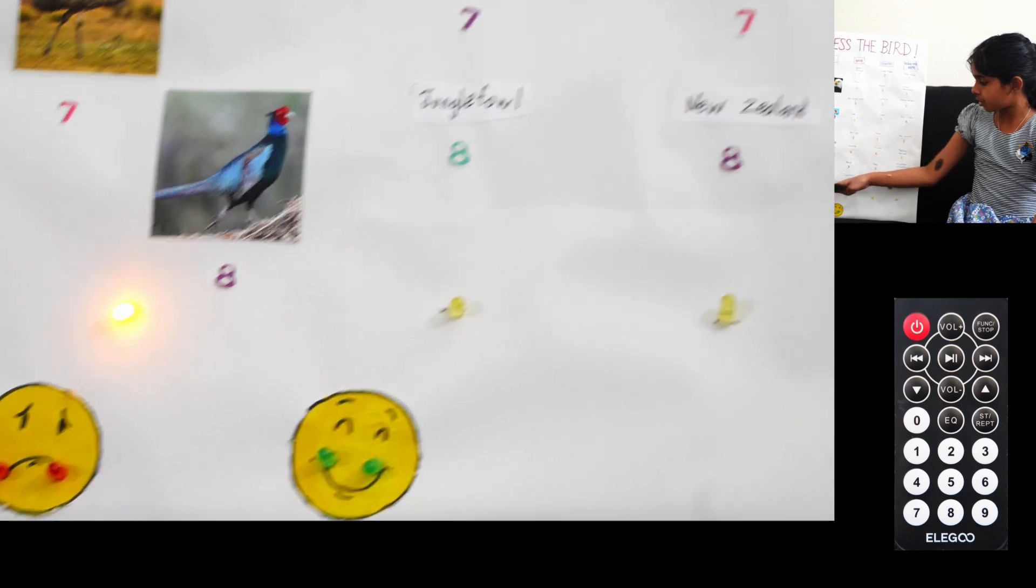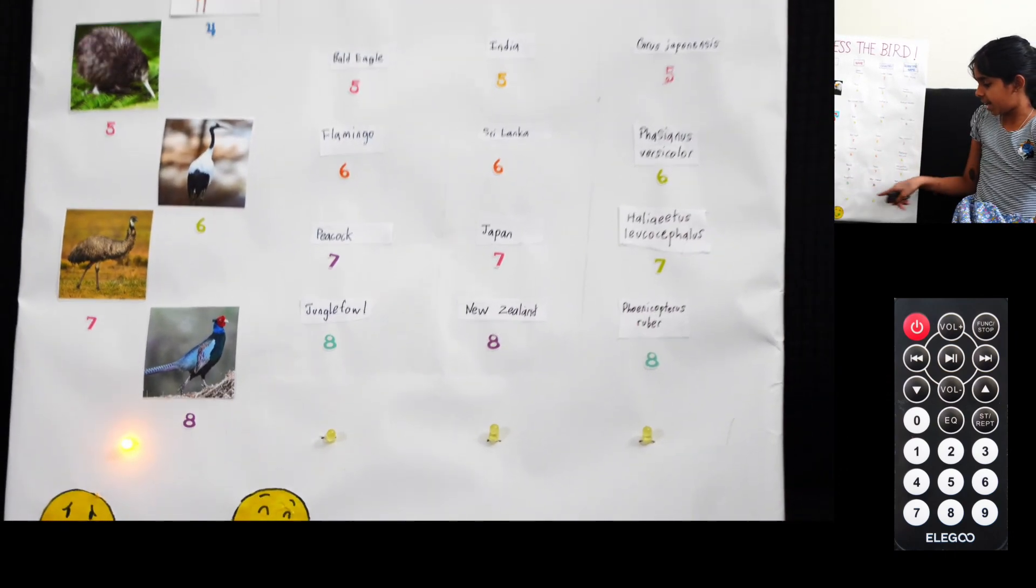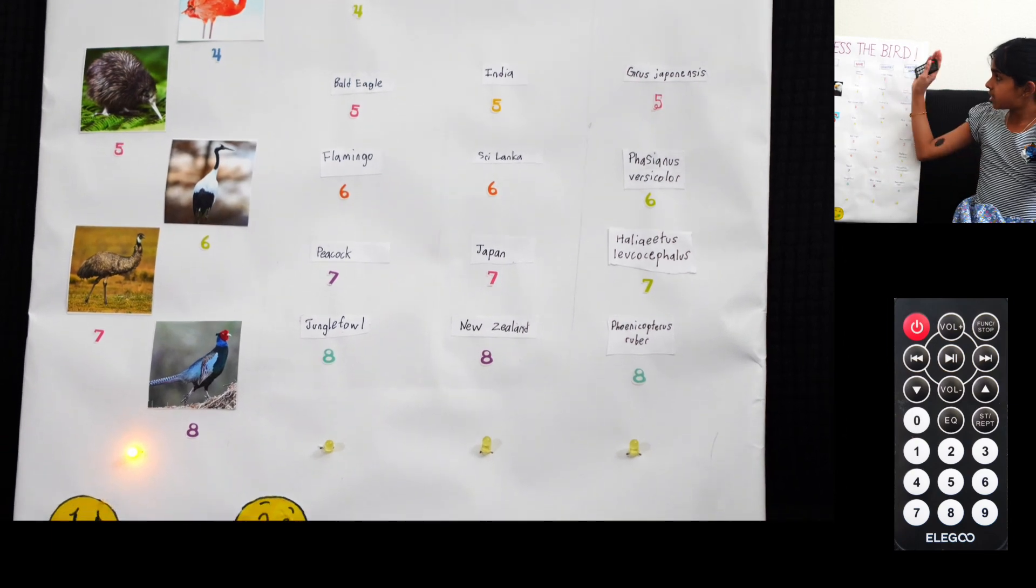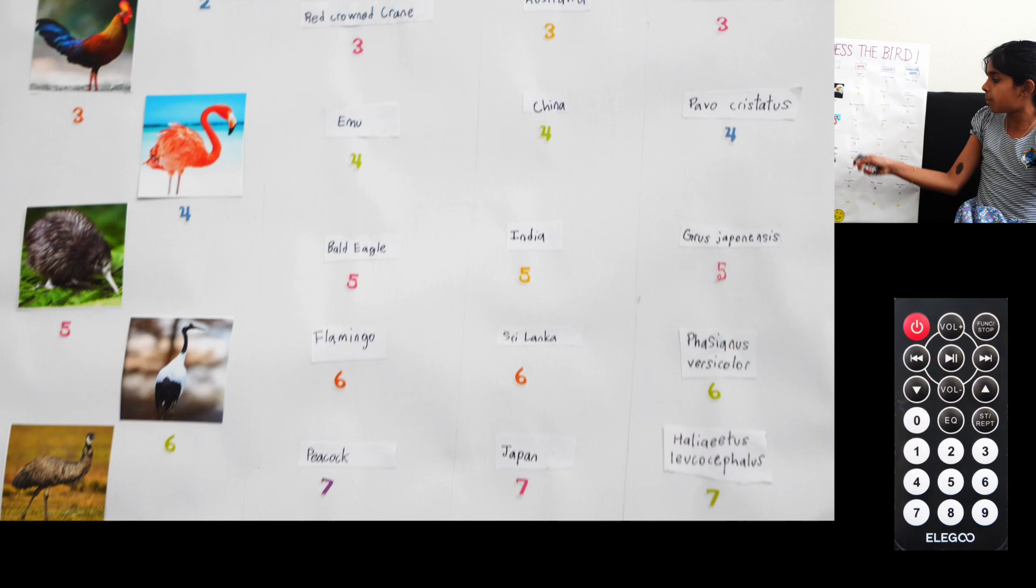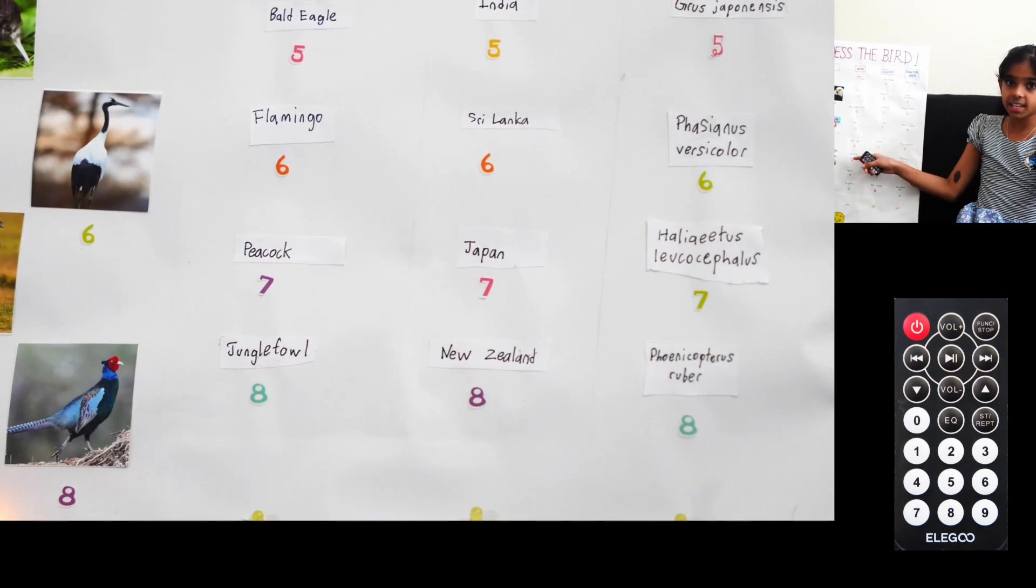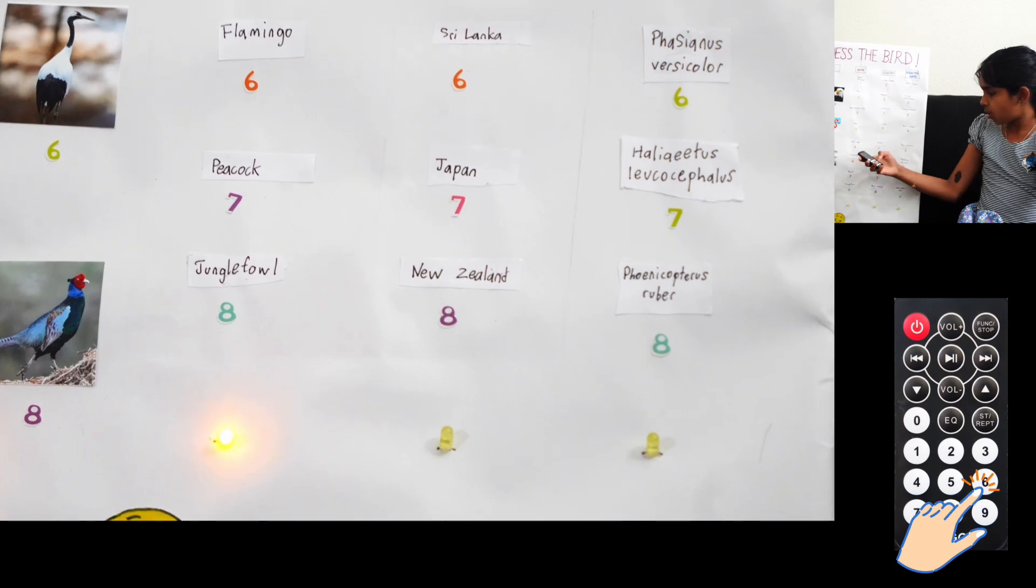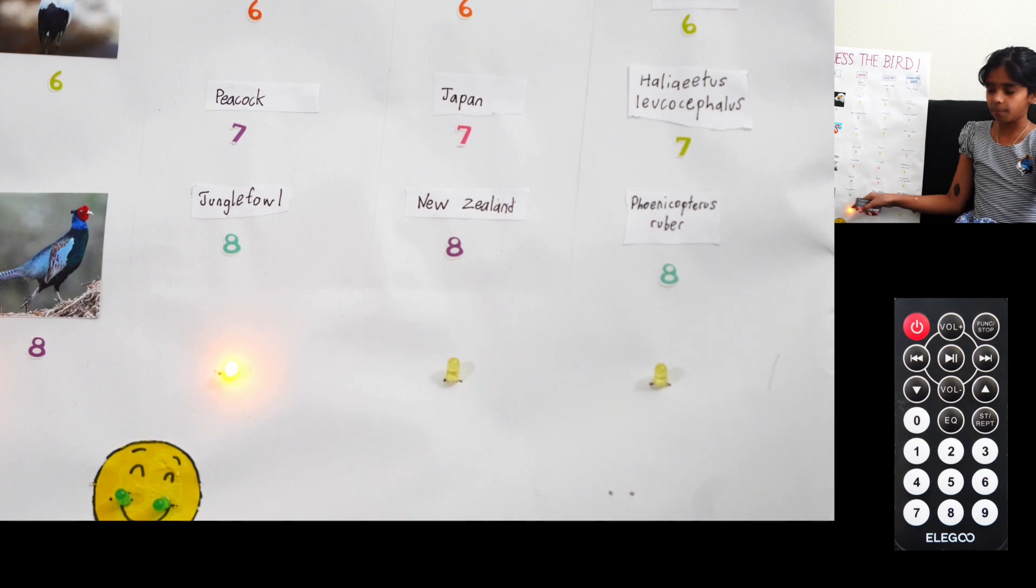The same is going to happen for the rest of the columns because each column has an LED light below it. So now we're moving on to the names column. We have to guess the name of the bird. And the name of the bird is the flamingo. And the flamingo's number six on the names column. So we click six on our remote. And again, this lights up.